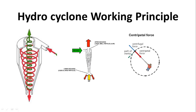Air enters inside the cone and exits with the upward fluid spiral movement current. So air, liquid, and smaller particles exit from the vortex finder or overflow, whereas the solid core and solid particles are removed from the underflow.